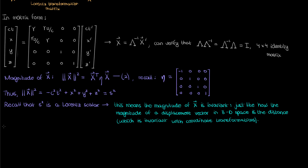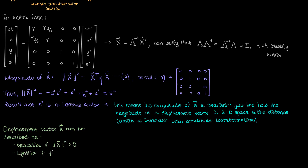Just like how my spacetime interval can be described as space-like, time-like, or light-like depending on its sign, the displacement four vector X can also be described as space-like, time-like, or light-like depending on its magnitude. If the magnitude squared of X is positive, X represents a space-like displacement. If the magnitude squared is 0, X is a light-like displacement, and if it's negative, X is a time-like displacement. The same definitions apply to four vectors in general, not just displacement. So a time-like four vector has a negative magnitude squared, a space-like four vector has a positive magnitude squared, and so on. In my next video, you'll see that the magnitude squared of the velocity four vector is negative, which makes it a time-like four vector.